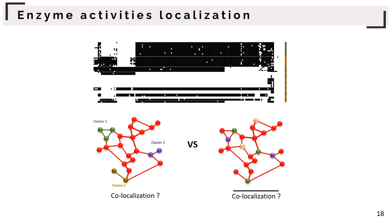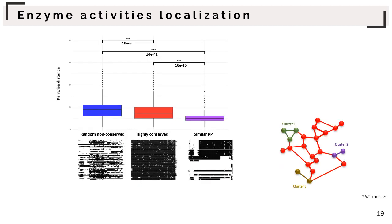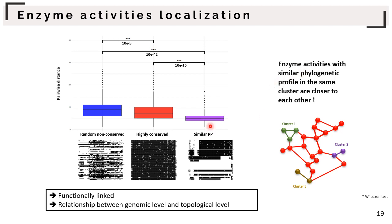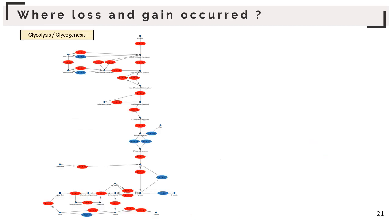Then we tried to understand where enzyme activities with similar phylogenetic profiles — that is, present and absent in the same species — are localized in the metabolic network. Are they co-localized? We calculated the distance between enzyme activities with similar phylogenetic profiles and compared it with the distance between lineage-specific nodes and highly conserved nodes. We showed that enzyme activities with the same phylogenetic profiles are close to each other, suggesting closely related function and a relationship between the genomic level and the topological level.